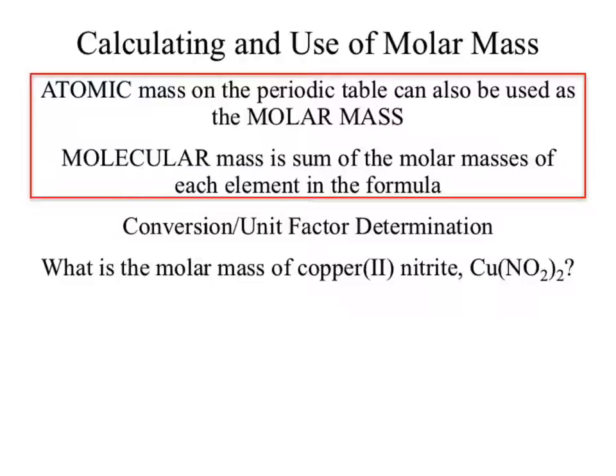Atomic mass is on our periodic table and can also be used as our molar mass. What happens if I move to a molecular mass? Molecules are made up of atoms. If I know the molar mass for each atom and I add all of those masses together, I've achieved the molecular molar mass. I can use that to convert. So what is the molar mass of copper(II) nitrite?